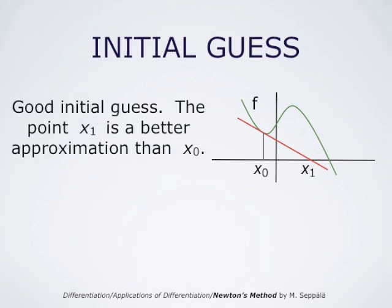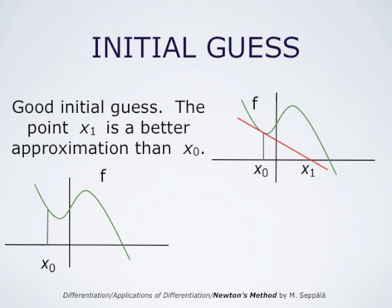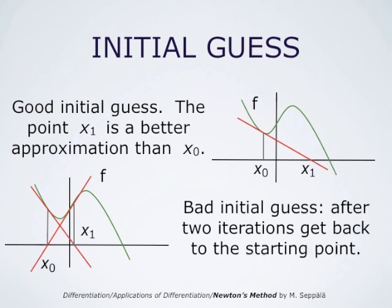But if we choose for this particular function an initial guess x0 slightly to the left of the first one, we get into trouble. Now x1 is the intersection of the red tangent line with the x-axis, and x2 would be obtained by going back to the graph at (x1, f(x1)) and drawing the tangent line. That tangent line intersects the x-axis at the original x0. So after two iterations we return to the starting point, and the process will not work.